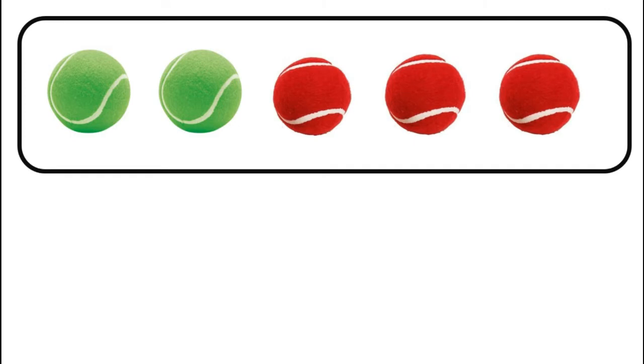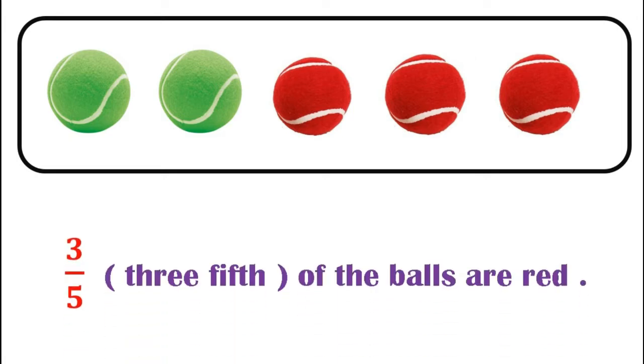Let us look at another example to understand the concept of fractions clearly. In the box we have two green balls and three red balls. So what fraction of red balls are there? The answer is three-fifth of the balls are red, where three, the numerator, represents the number of red balls, and five, that is the denominator, represents the total number of balls present inside the box.